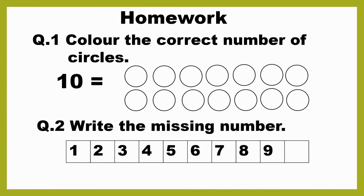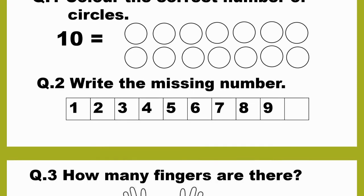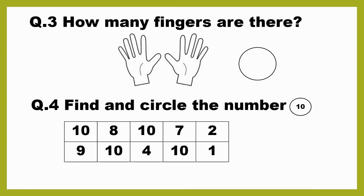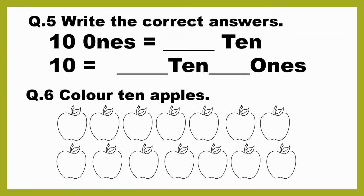Now your homework is: Question 1 — Colour the correct number of circles. Question 2 — Write the missing number. Question 3 — How many fingers are there? Question 4 — Find and circle the number 10. Question 5 — Write the correct answers. Question 6 — Colour ten apples. Hope you enjoyed today's class. Thank you!